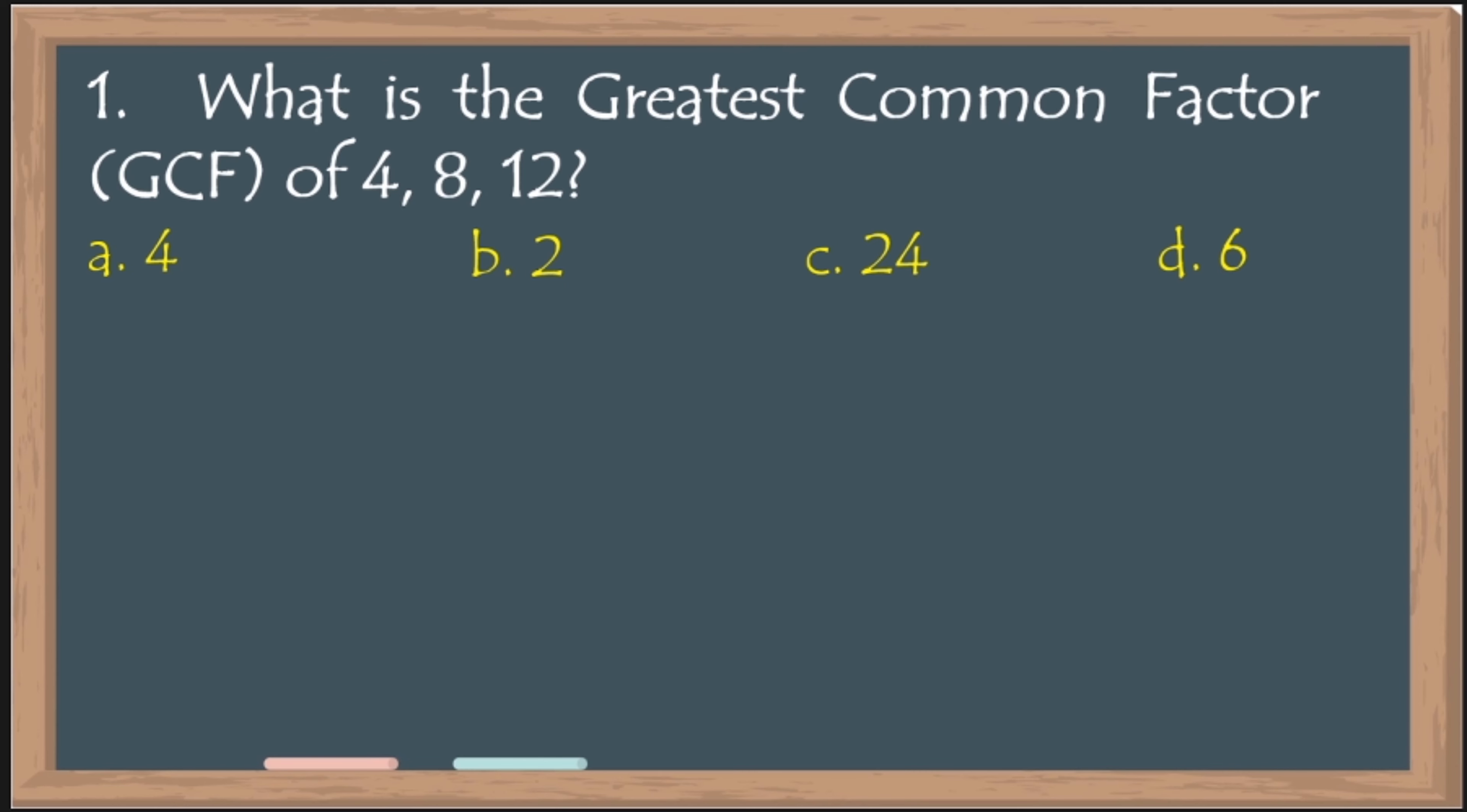Problem number 1. What is the greatest common factor or GCF of 4, 8, and 12? When you say greatest common factor or GCF, ano yung pinakamalaking number na pwede nating i-divide sa 4, 8, and 12? Sabihin mo ay 2. Pwede i-divide sa 2 yan. Yung 4, yung 8, and 12. Pero yun na ba ang pinakamalaking number?